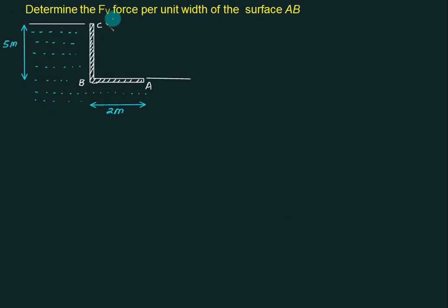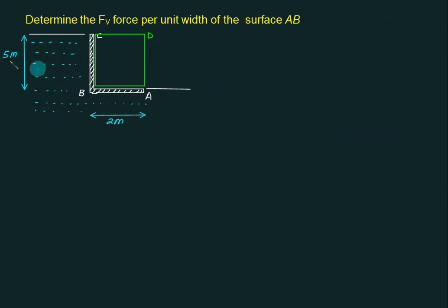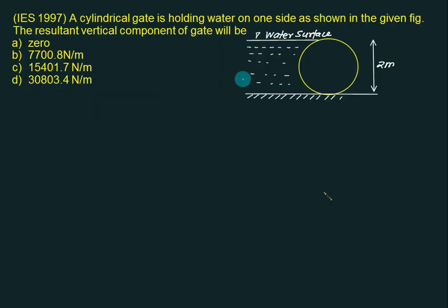For the second problem, we want to find only the vertical force on AB. This situation matches standard case number 2 — some water is present below the surface, meaning an imaginary liquid column acts over it, forcing upward. We consider the imaginary area ABCD with height 5 meter. FV = ρg × V = 9810 × (5 × 2 × 1) = 98,100 N or 98.1 kilonewton, acting vertically upward.